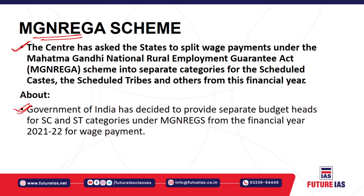MGNREGA — the Mahatma Gandhi National Rural Employment Guarantee Act — was passed in 2005 by the Parliament of India. It is an Indian labor law and social security measure that aims to provide a guarantee of the right to work in the Indian context. It was initiated with the objective of enhancing livelihood security in rural areas by providing at least 100 days of guaranteed wage employment in a financial year to every household whose adult members volunteer to do unskilled manual work.